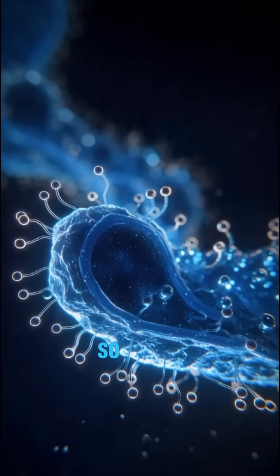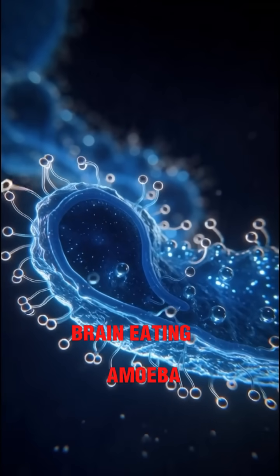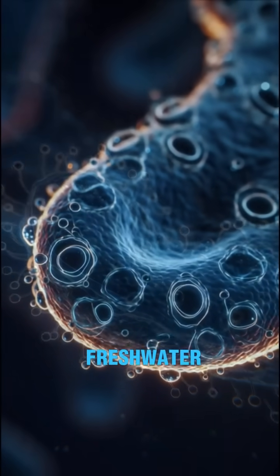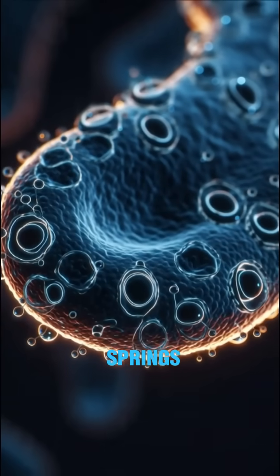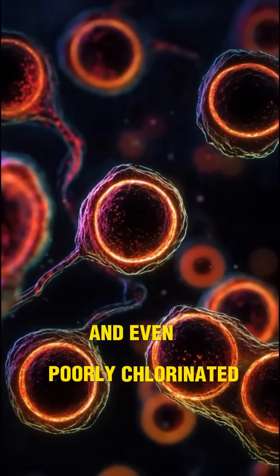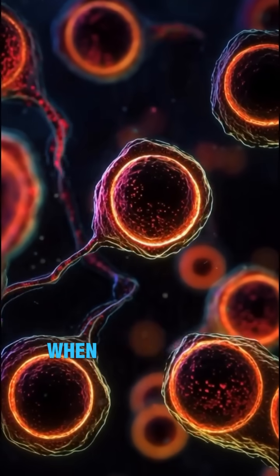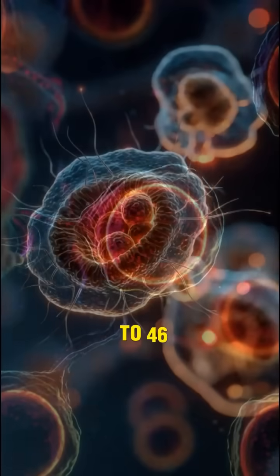Meet Naegleria fowleri, the so-called brain-eating amoeba. It lives in warm fresh water, thrives in lakes, hot springs, and even poorly chlorinated pools, and becomes most active when temperatures hit 30 to 46 degrees Celsius.